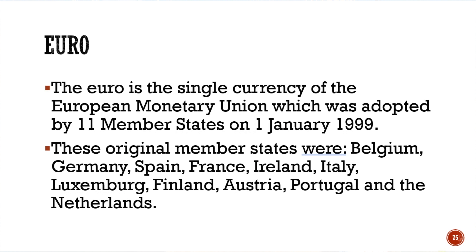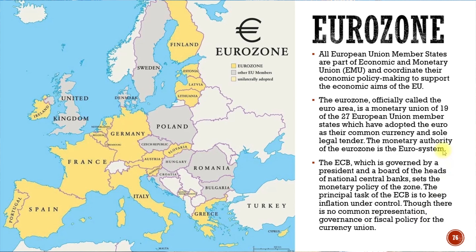The euro is a single currency of the European Monetary Union, adopted by 11 member states on January 1st, 1999. The original members were Belgium, Germany, Spain, France, Ireland, Italy, Luxembourg, Finland, Austria, Portugal, and the Netherlands. This is an older map of the eurozone. The United Kingdom was listed as an EU member, but that has naturally changed. The ones not part of the eurozone include Sweden and Denmark.